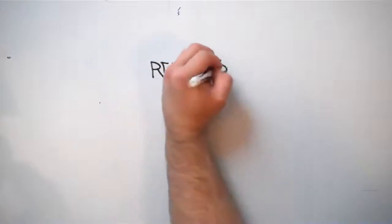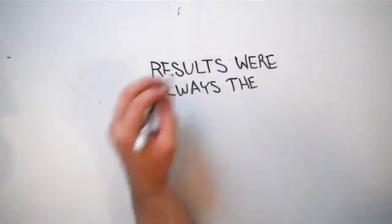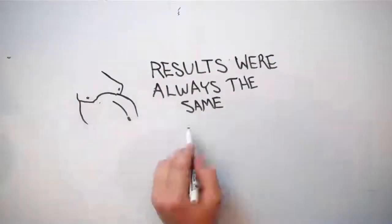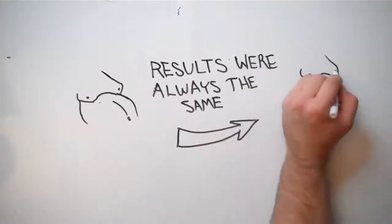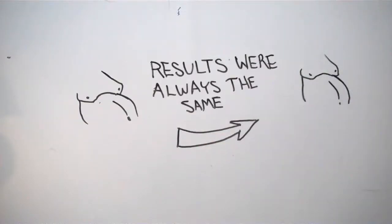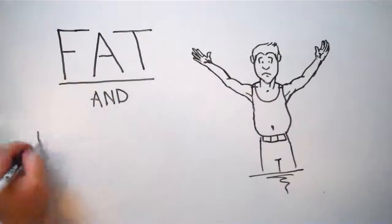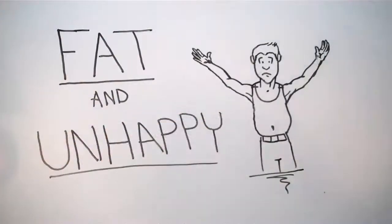But no matter what I tried, the results were always the same. I would struggle to lose a few pounds, and then the first time I would give myself a small break, the weight would come right back on. I was getting to the point where I felt like giving up. I started to think, maybe I just don't have the right metabolism, or maybe I just don't have the right genetics to get in shape. I thought maybe I was truly destined to be fat and unhappy my entire life.